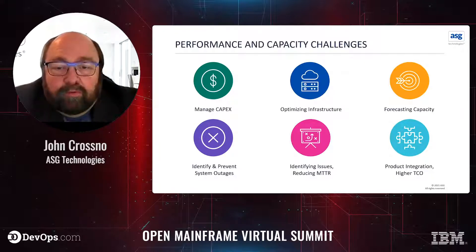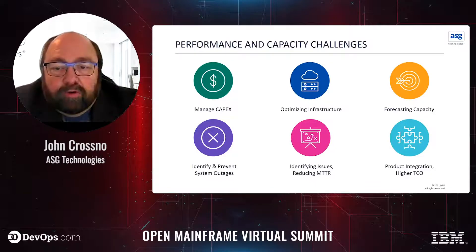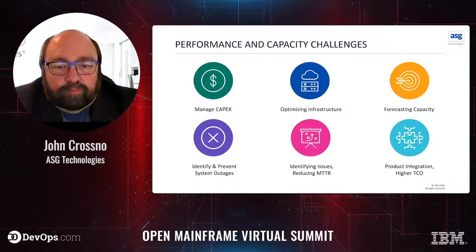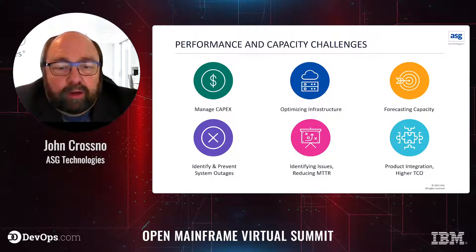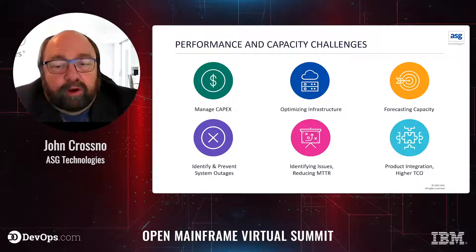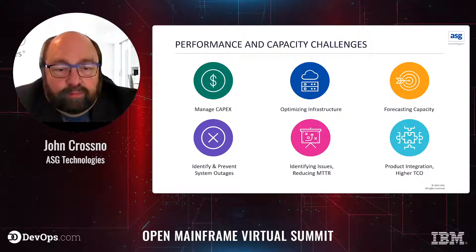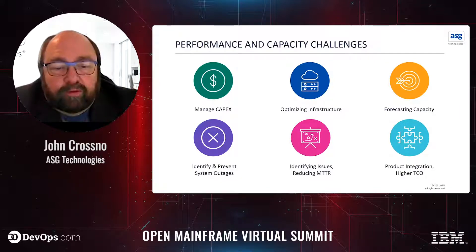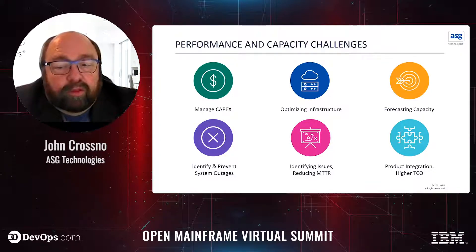New mission-critical applications emerge and hardware platforms advance. It's difficult to identify and prevent unplanned system and application outages that are a massive cost to the business. They can't obtain a complete view of performance bottlenecks and issues across mainframe, distributed, and cloud systems, which makes it harder to reduce the mean time to repair of bottlenecks and issues impeding business-critical value streams. On top of these challenges, they're often using multiple products that are not well integrated and aren't easy to train newer staff on, especially next-gen IT professionals who have little to no mainframe experience. This leads to a higher total cost of ownership.